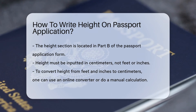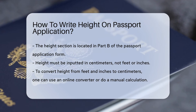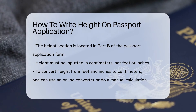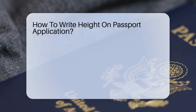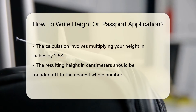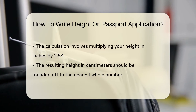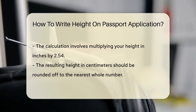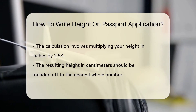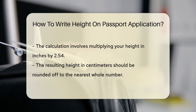Fear not, we're here to guide you through. You'll find the height section in Part B of the passport application form. This is where you need to input your height, and here's the catch — it must be in centimeters. That's right, folks. No feet, no inches. It's all about the centimeters.